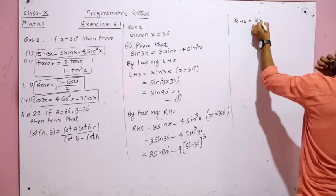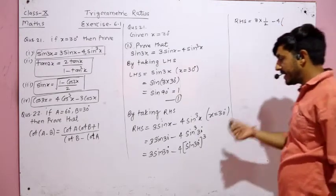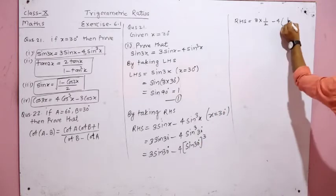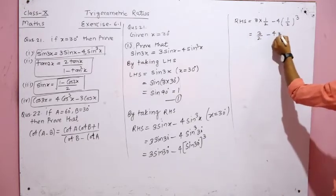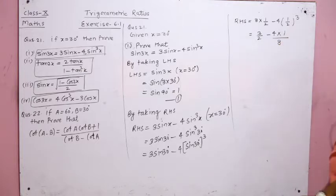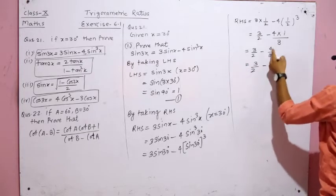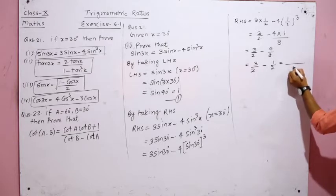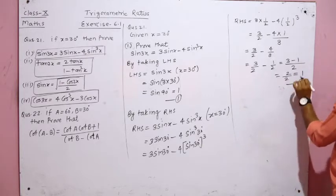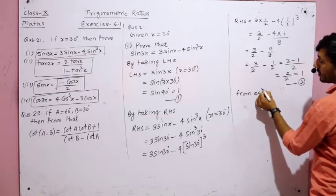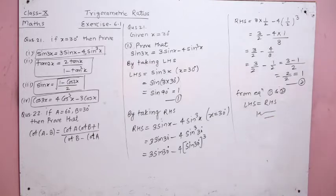Substituting sin 30° = 1/2: RHS = 3 × (1/2) − 4 × (1/2)³ = 3/2 − 4 × (1/8) = 3/2 − 1/2. Taking LCM as 2, we get (3 − 1)/2 = 2/2 = 1. This is equation number 2. From equations 1 and 2, LHS = RHS, hence proved.